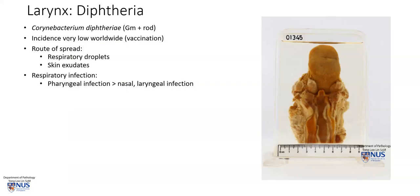Diphtheria is caused by Corynebacterium diphtheriae, which is a gram-positive rod. Currently, the incidence is extremely low worldwide, with several thousand cases a year, because of widespread vaccination. This organism can spread via respiratory droplets, as well as through the skin through exudates. In the respiratory tract, the infection usually occurs in the pharyngeal region.